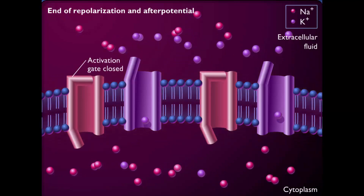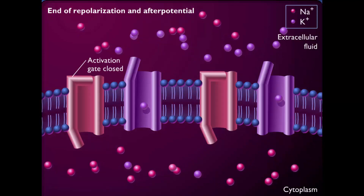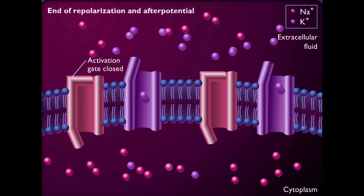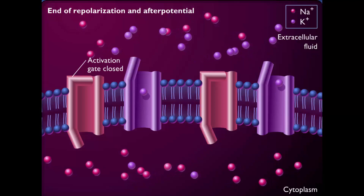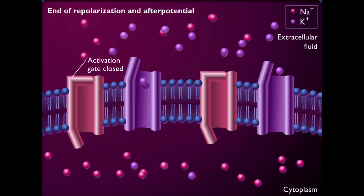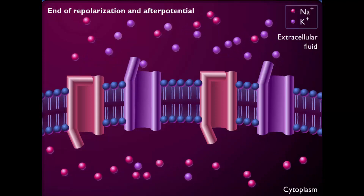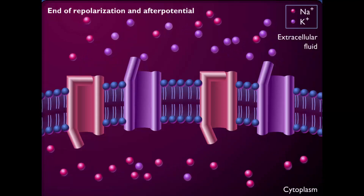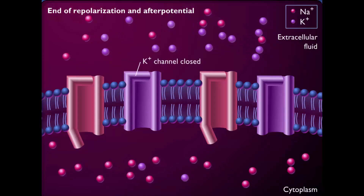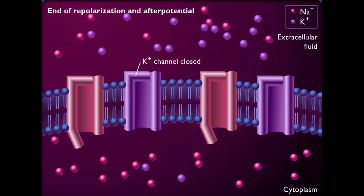The increased potassium ion permeability lasts slightly longer than the time required to bring the membrane potential back to its resting level. The extra efflux of potassium ions causes the membrane potential to become slightly more negative than the resting value — this is hyperpolarization. After the voltage-gated potassium ion channels close, the active transport of sodium and potassium ions reestablishes the resting membrane potential.